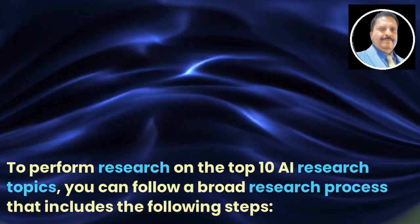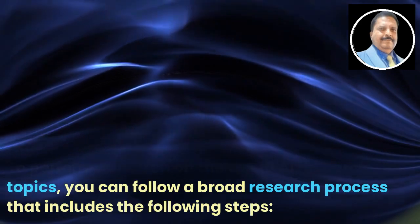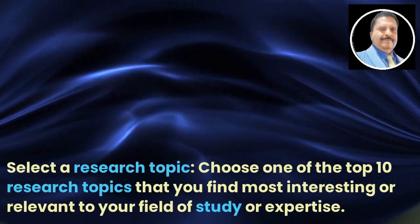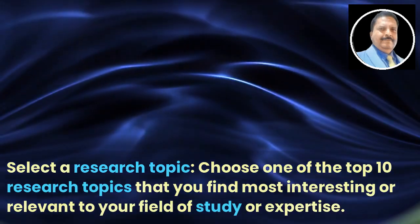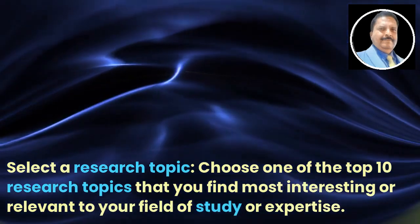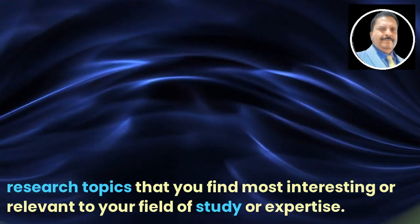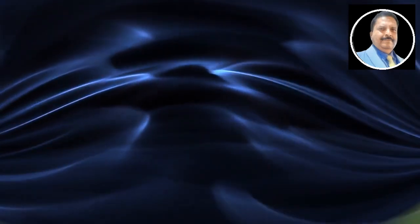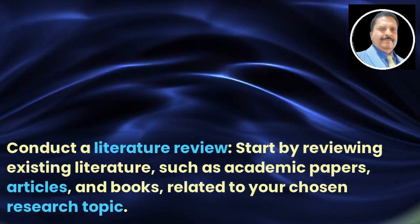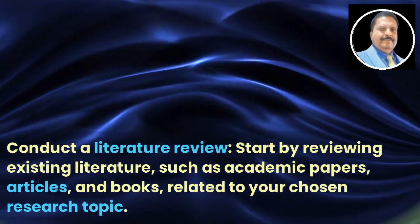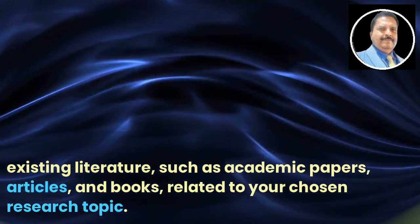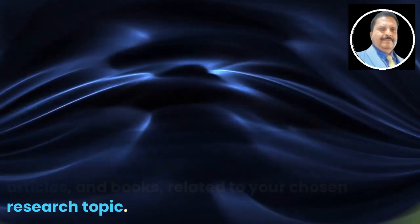To perform research on the top AI research topics, you can follow a broad research process that includes the following steps. Step 1: Select a research topic — choose one of the top 10 research topics that you find most interesting or relevant to your field of study or expertise. Step 2: Conduct a literature review — start by reviewing existing literature such as academic papers, articles, and books related to your chosen research topic.